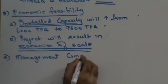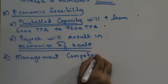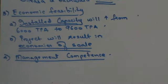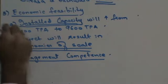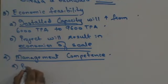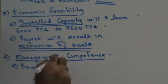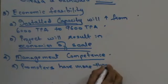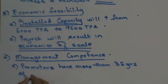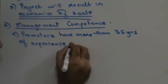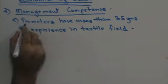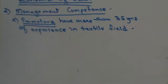The fourth point is management competence. Right from the beginning, the promoters have more than 35 years of experience in the textile field. Under this section, you write about the promoters and their background.